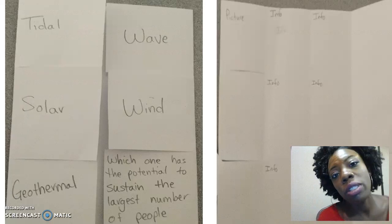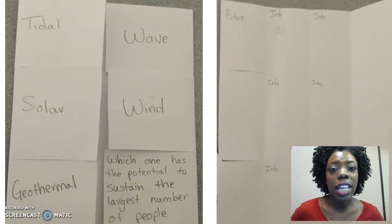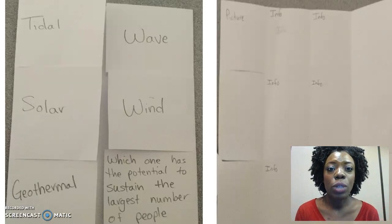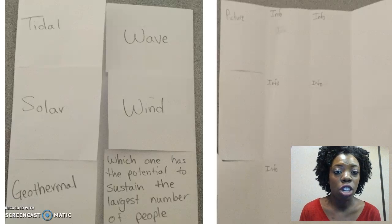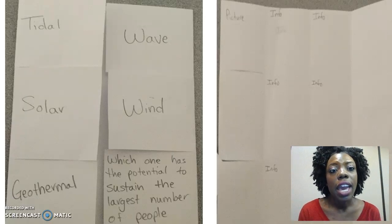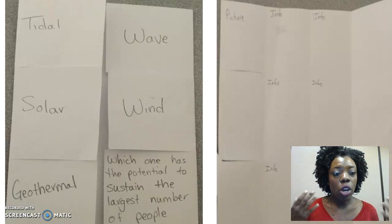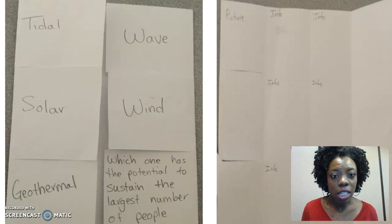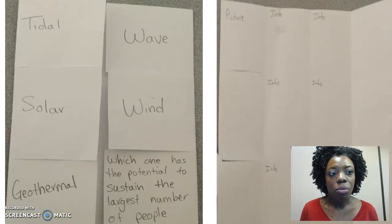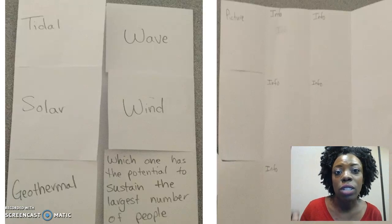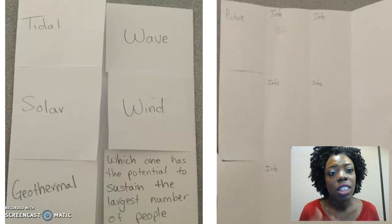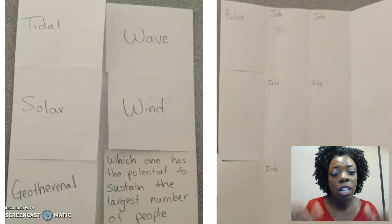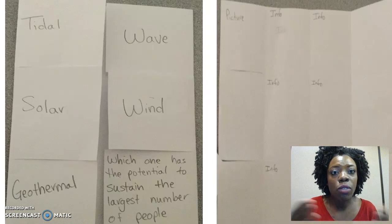First, you're going to set up your notes page in your ISN on page 23. You're going to title it Alternative Energy Sources. And you are going to create a foldable like this. If you want to create your notes a different way, go right ahead — this is just a way that a lot of students find helpful to reinforce what they're writing down.